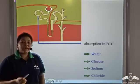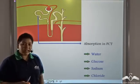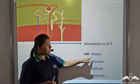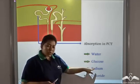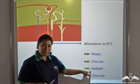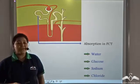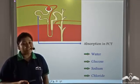In the proximal convoluted tubule, absorption of water, glucose, sodium and chloride takes place from the glomerular filtrate.